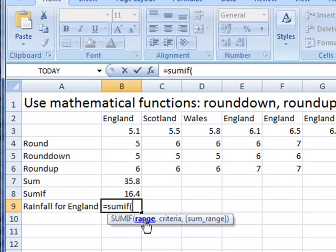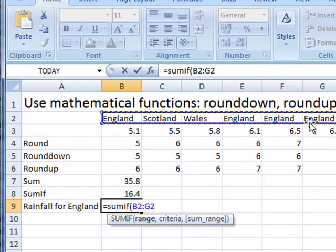What is the range that I want to apply the criteria to? And this is the range that I want to apply the criteria to. England, Scotland, Wales. I want to check which ones of those are England. So that is the range I am adding my criteria to.